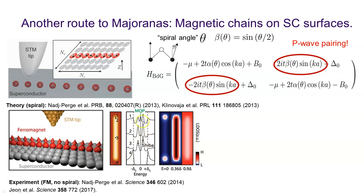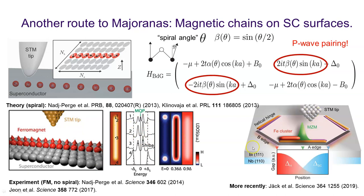There have been other experiments trying to reproduce these results, with some controversy. One deposits bismuth — which has strong spin-orbit coupling — on top of niobium, a BCS superconductor, creating a structure with edge states like a topological insulator, then places an iron cluster on top. This paper from September 2019 aligns with the proposal we made in early 2019 in our first paper on this topic.